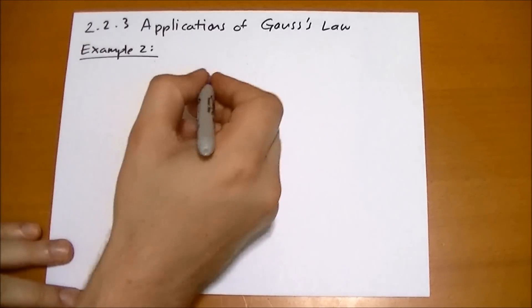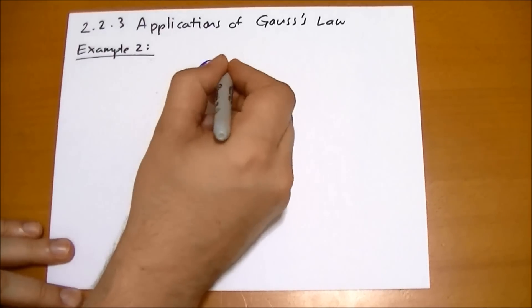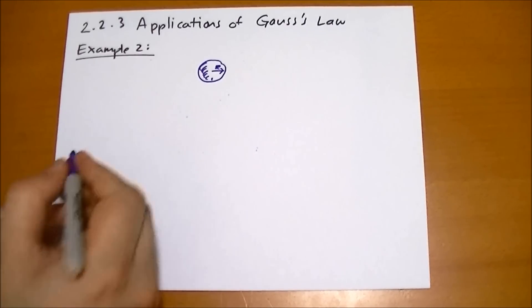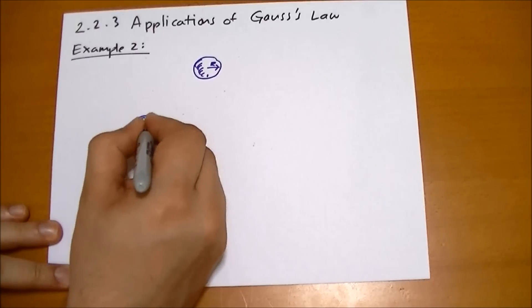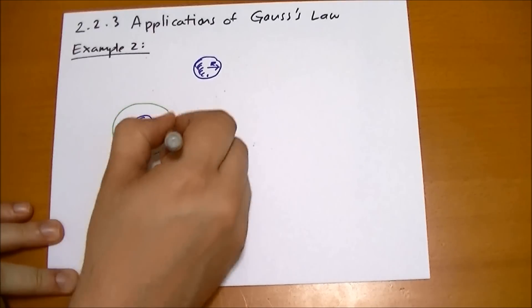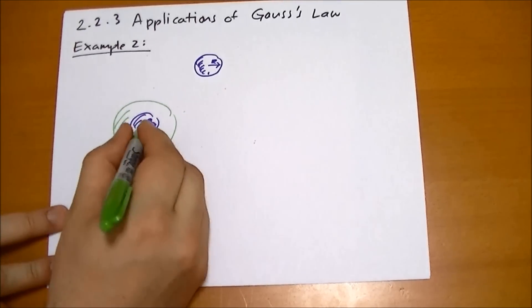Let me draw what that might look like. So we have a circle, which is a sphere — actually, let's draw this again. We have a sphere of radius A, and we want to find the electric field outside of this surface. So we pick a Gaussian surface. It doesn't matter how big it is, just as long as it's a sphere centered on that sphere, and it has some radius R.